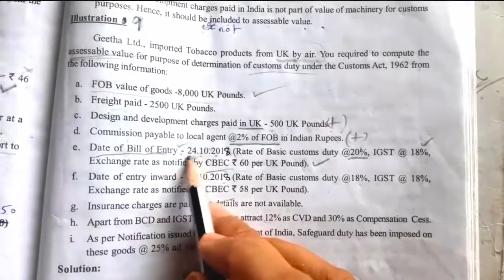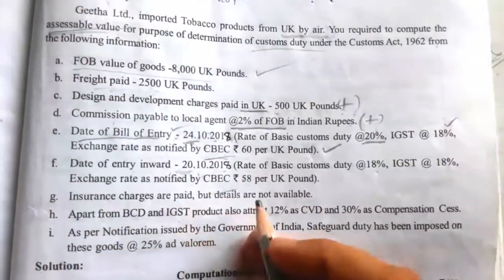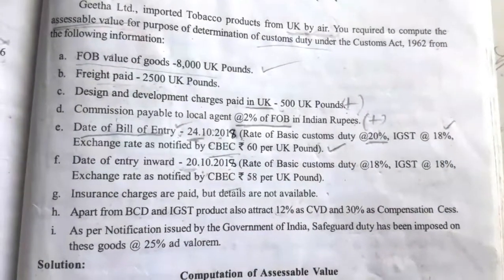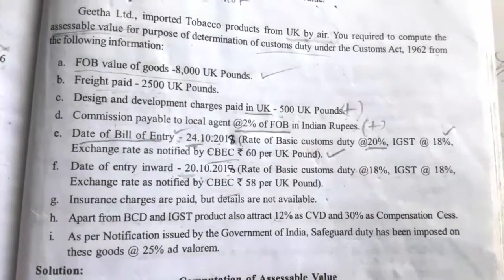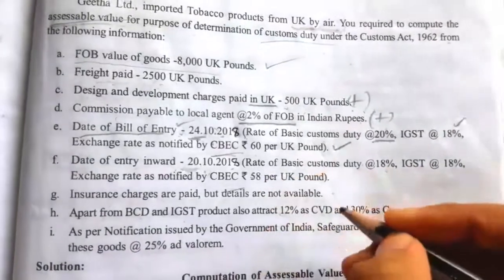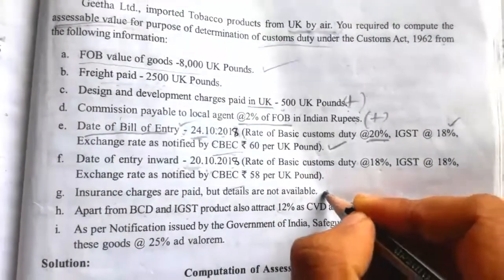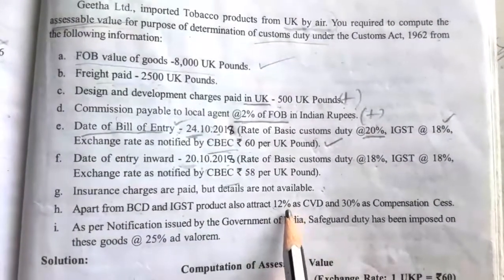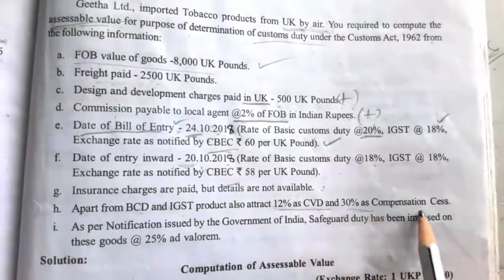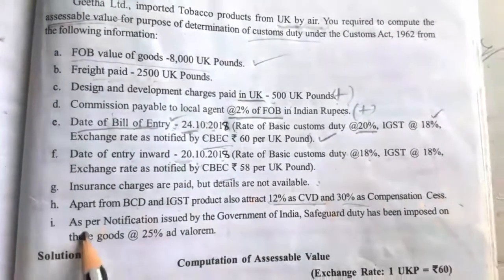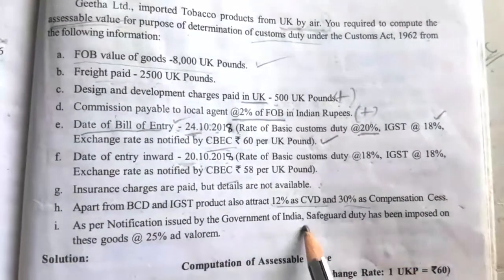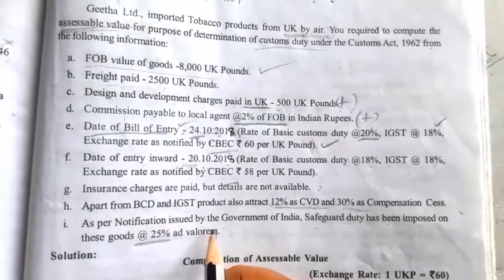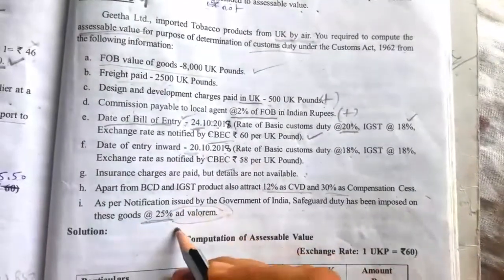We have to consider the latest date, that is the 24th. Insurance charges are paid but details are not available, so after FOB we have to add insurance, calculated at 1.125% on FOB. Apart from BCD and IGST, the product also attracts 12% CVD and 30% compensation. Safeguard duty has been imposed at 25% ad valorem — we have to compute only the safeguard duty at 25%.